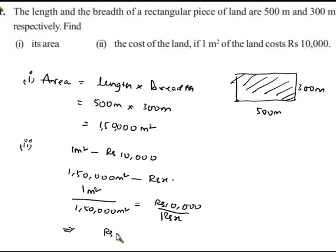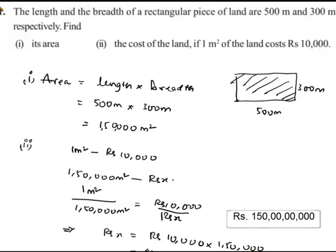Rs X is equal to Rs 10,000 times 150,000, that is equal to Rs 150 crores.